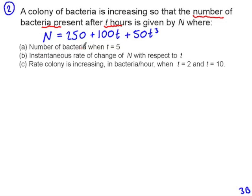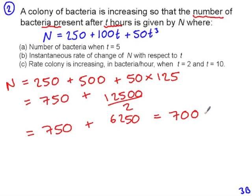So if we want to find the number of bacteria when T is 5, that just means substituting in a value of 5 for T. So the number of bacteria will be 250 plus 100T is 500 when T is 5, plus 50T cubed, so 50 times 125, 7,000 bacteria after 5 hours.